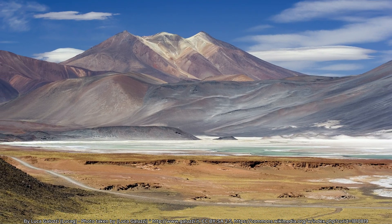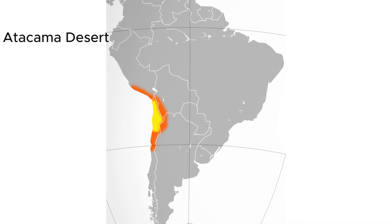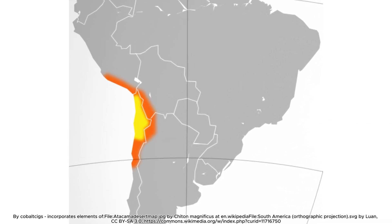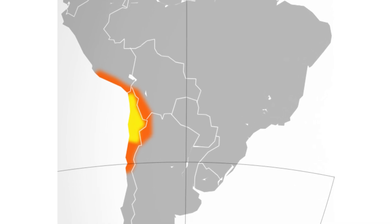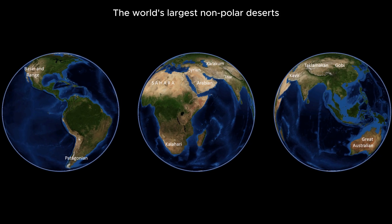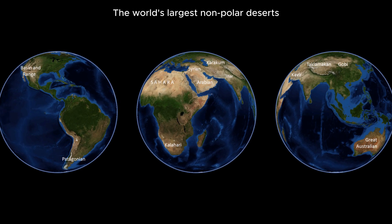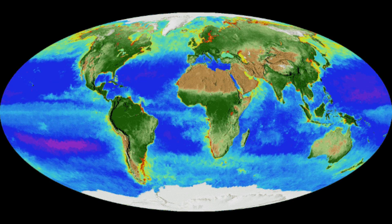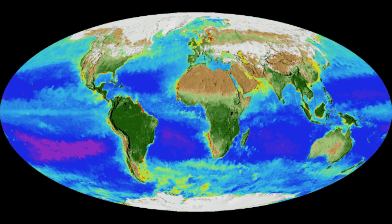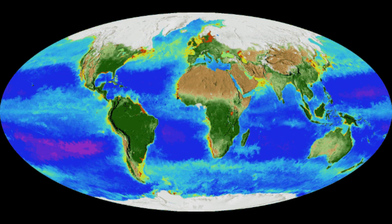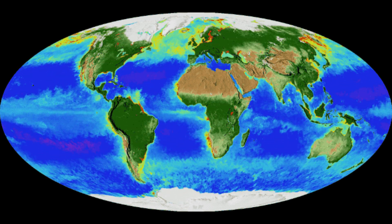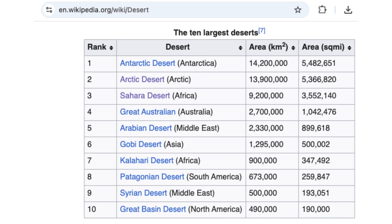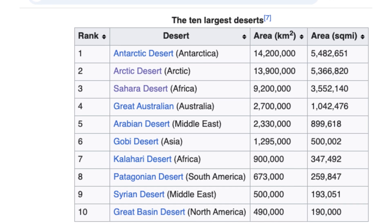Deserts are often thought of as hot, barren places with little to no rainfall. While it's true that the lack of rain is a defining feature, the reasons behind this scarcity of moisture are complex and vary significantly across different desert types.